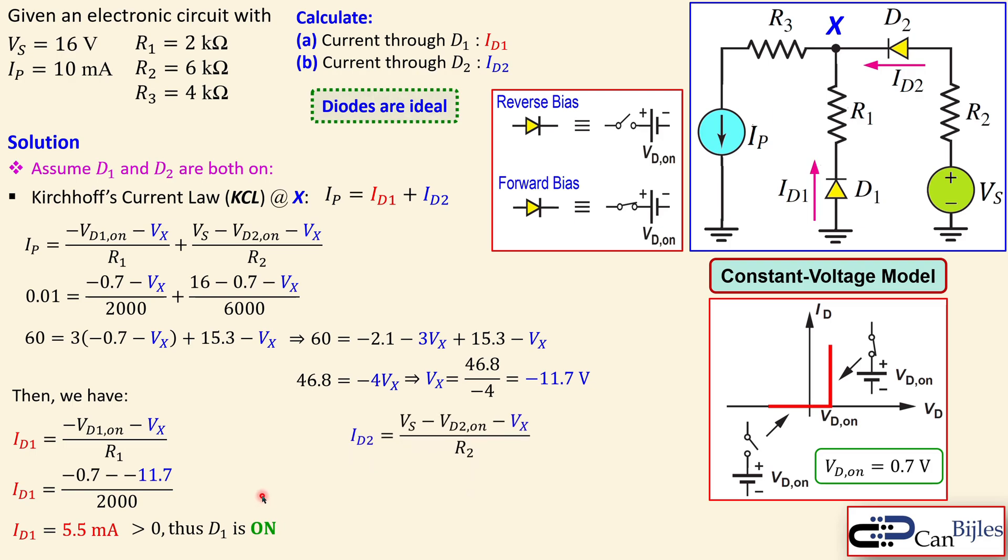Now let's also check D2. The current through diode 2, ID2, is VS minus VD2 on minus VX over R2. When you substitute the values you will get 4.5 milliamps. Again, this is larger than zero, thus D2 is on. So our assumption in this case is correct. We can say D1 and D2 are both on.